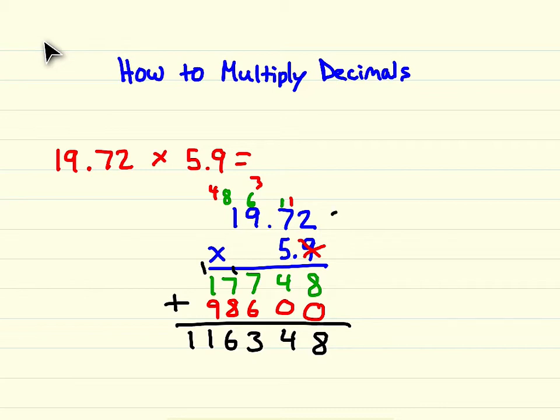19.72 is close to 20, and 5.9 is close to 6. So the answer should be close to 120. So where can we put our decimal down here to make it about 120? Well, if you put your decimal between the 6 and the 3, you'd have 116.348, which is very close to 120.